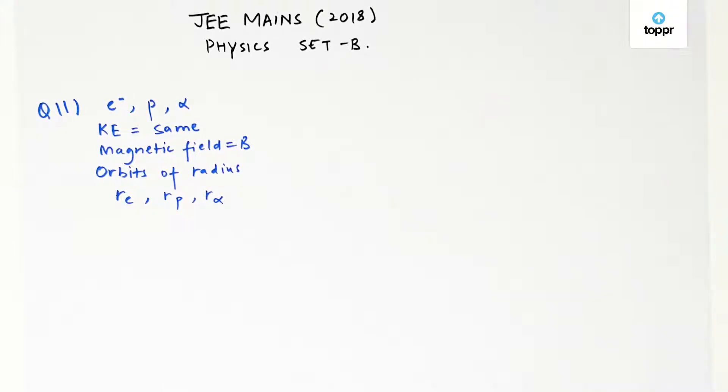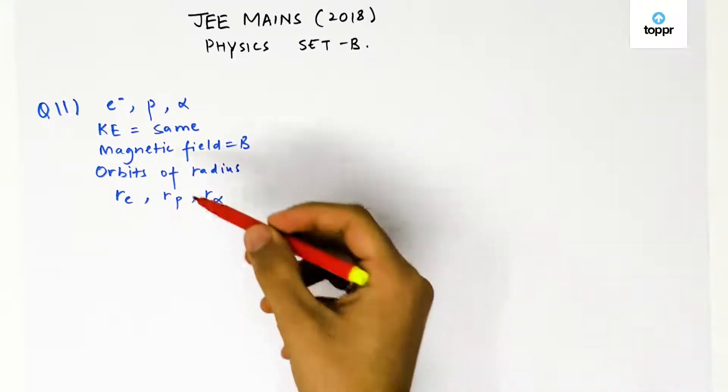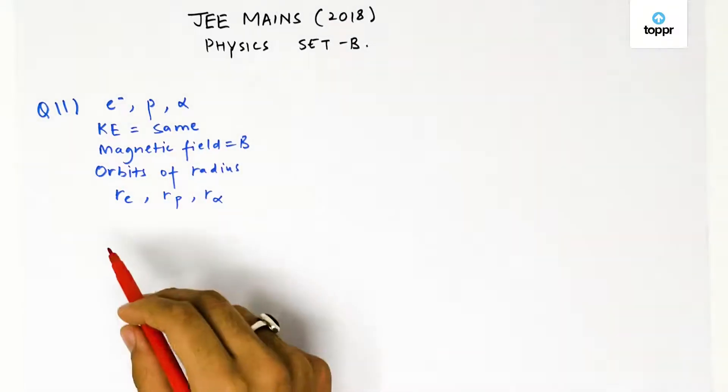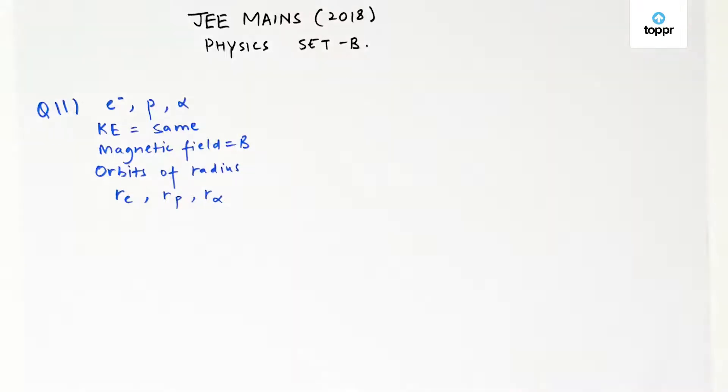Question number 11 says that we have an electron, proton and an alpha particle having the same kinetic energy. Kinetic energy is same and they are moving in circular orbits of radii Re, Rp and R alpha, and they are moving in a uniform magnetic field of magnetic field equals to B. We have to find out the relation between Re, Rp and R alpha.